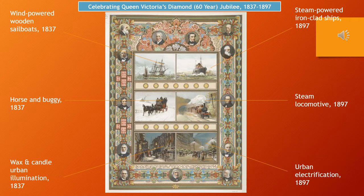Streetcars and bicycles allowed for much more mobility for people living within industrialized urban centers. These urban innovations allowed for more leisure time and leisure activities such as spectator sports and sports clubs, more public parks, public beaches, department stores, museums, theaters, and opera houses, with a more aesthetic urban landscape.